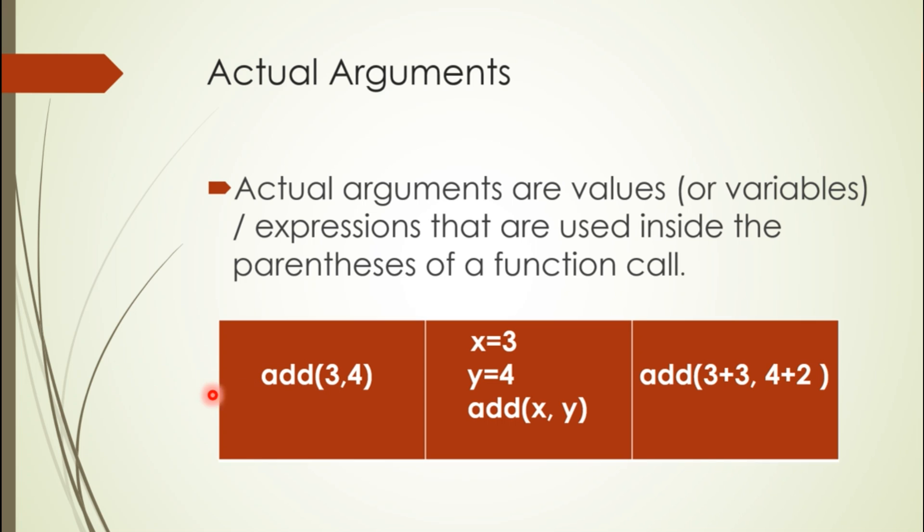In this case, we passed three and four as arguments. When this function is defined, the values will be assigned. If the function is add and has two parameters, a and b, then a will be assigned value three and b will be four.